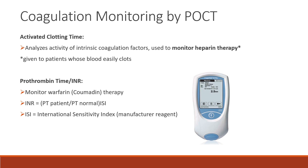Prothrombin time and INR monitors warfarin therapy, also called Coumadin therapy. INR, or international normalized ratio, is calculated using the formula: INR = (PT result of the patient ÷ PT normal value) raised to the ISI power, where ISI is the International Sensitivity Index found in the manufacturer's reagent.